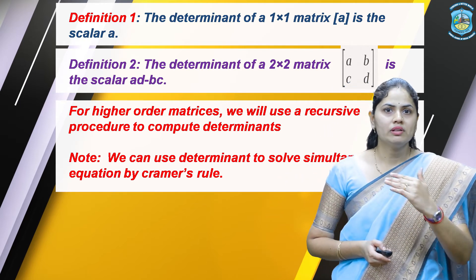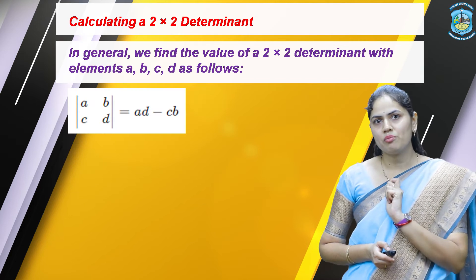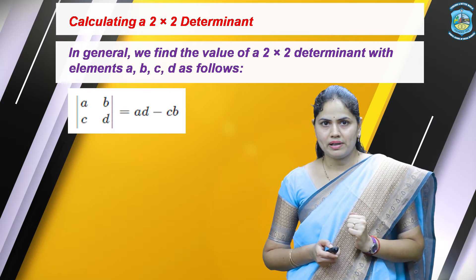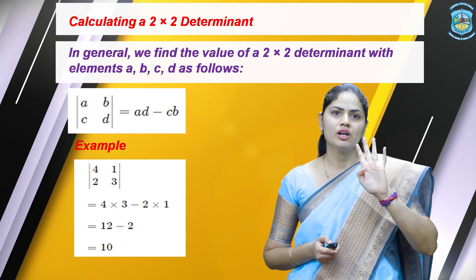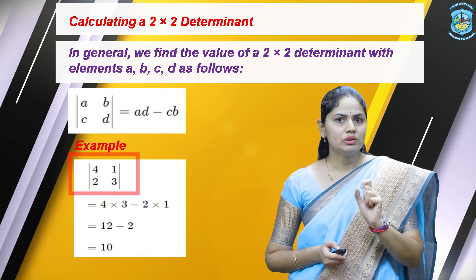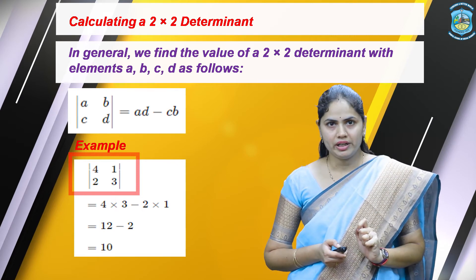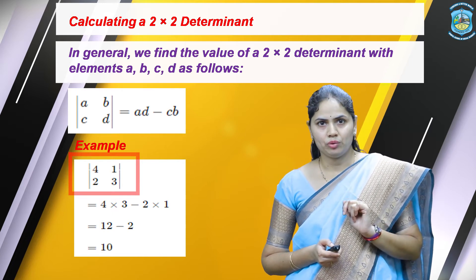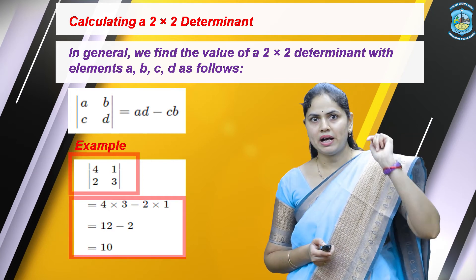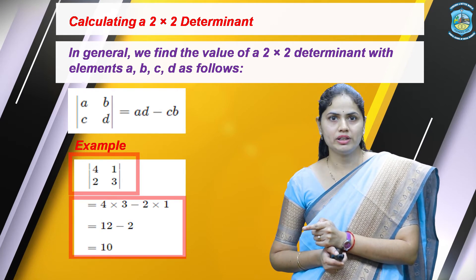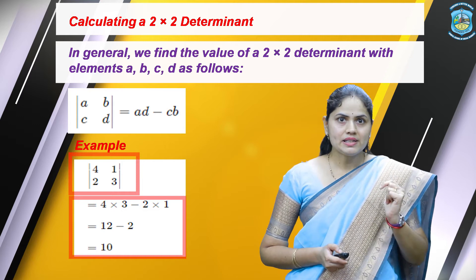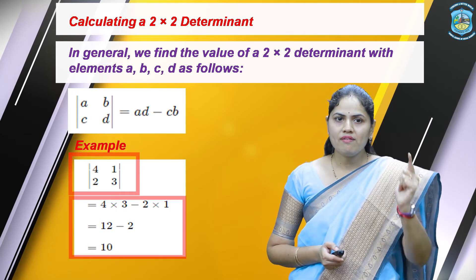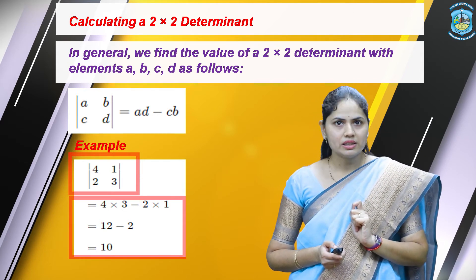Let us take one example to solve the determinant. This determinant has 4 components: 4, 1, 2, 3. We need to find the determinant value or scalar. For that, we do cross multiplication by placing upward and downward arrows. 4 is multiplied by 3 (downward arrow) giving 12, then minus 2 multiplied by 1 (upward arrow) giving 2. So 12 minus 2 equals 10. The value of this determinant is 10.